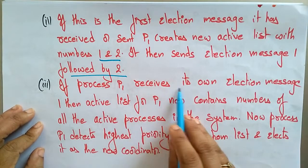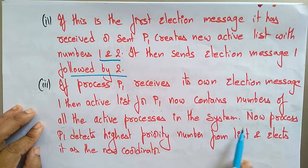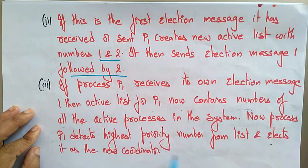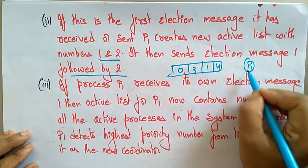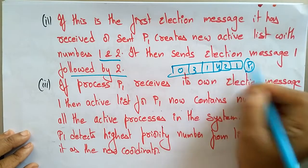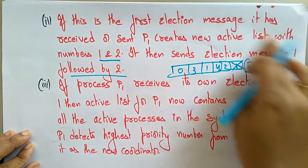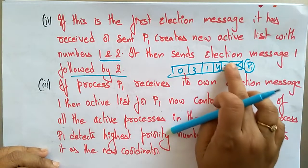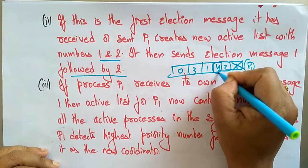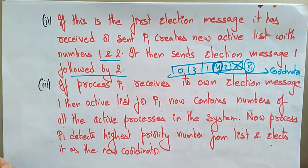If process P1 receives its own election message back, then the active list for P1 now contains the numbers of all active processes in the system. P1 then detects the highest priority number from the list and elects it as the new coordinator. For example, if the loop goes around with values 0, 3, 1, 4, when the message returns to P1 and P1 sees its own number is already in the list, the loop is complete. P1 checks the active list, finds 4 as the highest priority, and makes that process the coordinator.